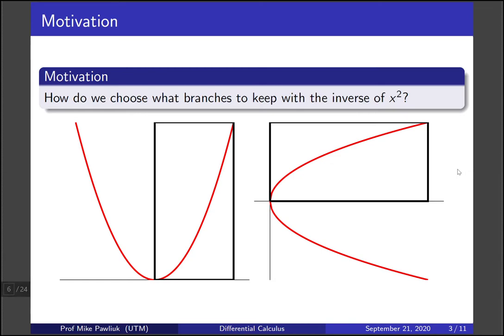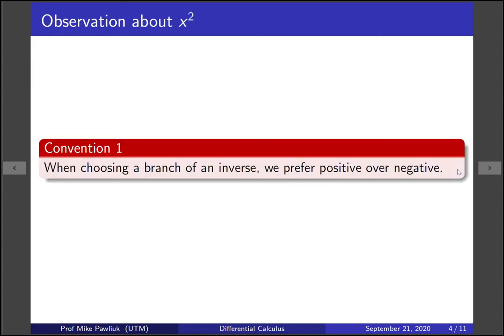So that's the one that we've chosen since we were in kindergarten, and this gives us our first convention when it comes to choosing branches. So our first convention is when we choose the branch of an inverse, we prefer positive over negative. This will show up in some other examples we do.